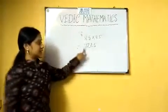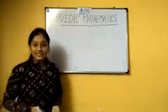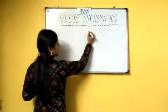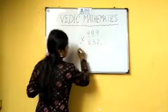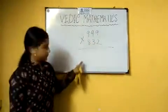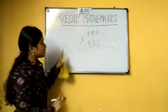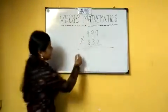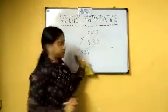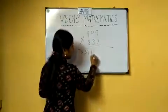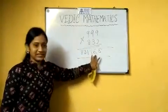Next we come to the best method multiplication. Example: 999 into 832. Subtract 1 from 832, which gives 831. Then take the complement of 832, which is 168. So the answer becomes 831168.